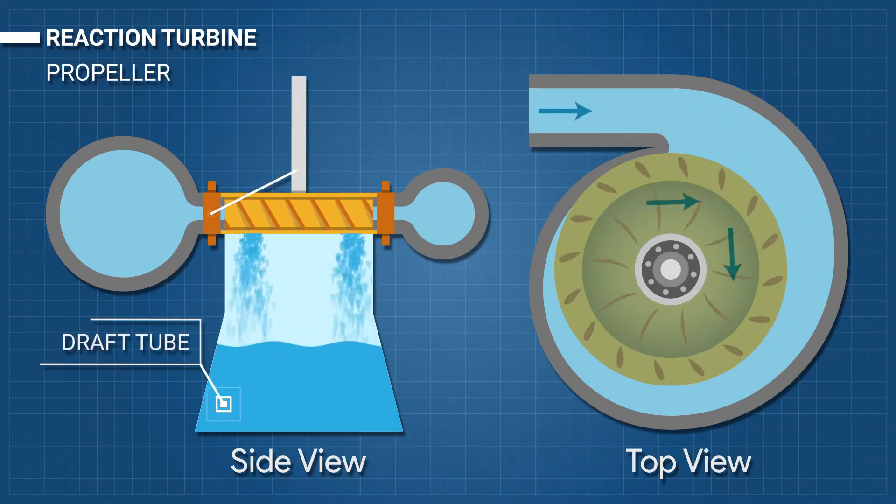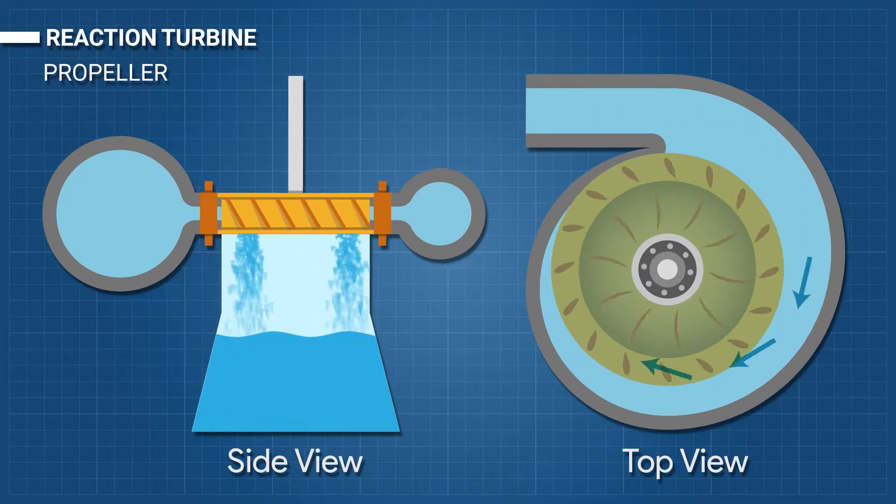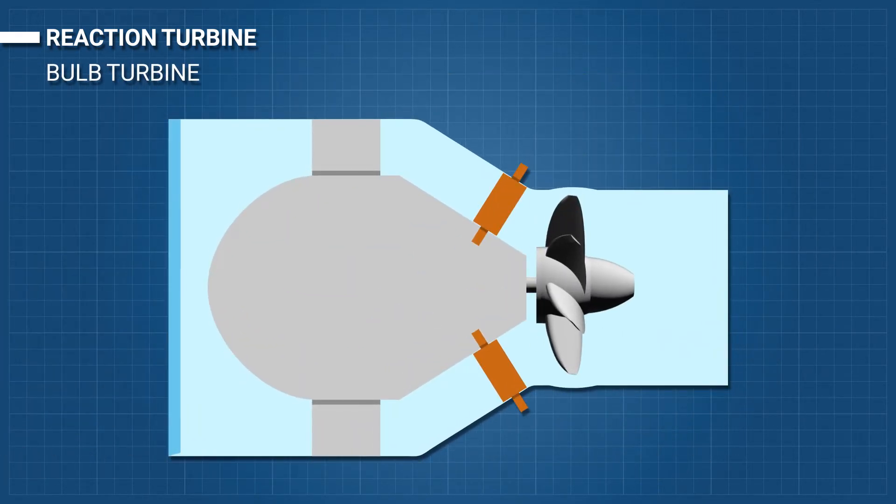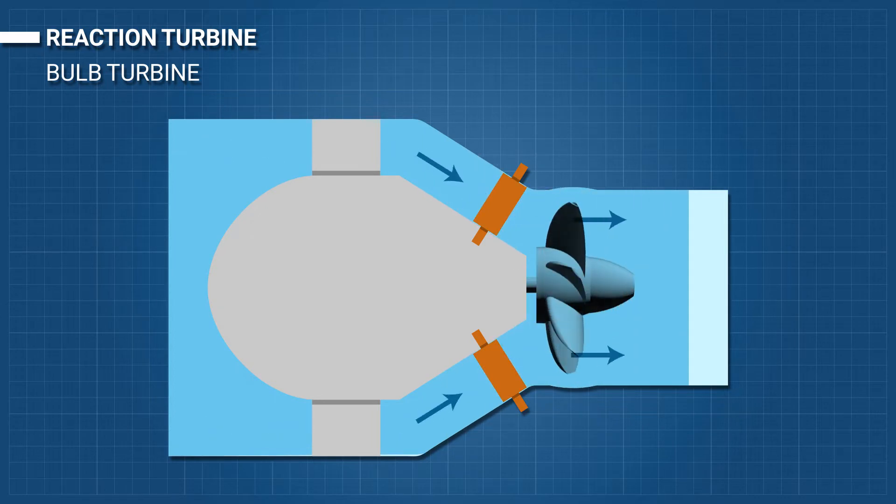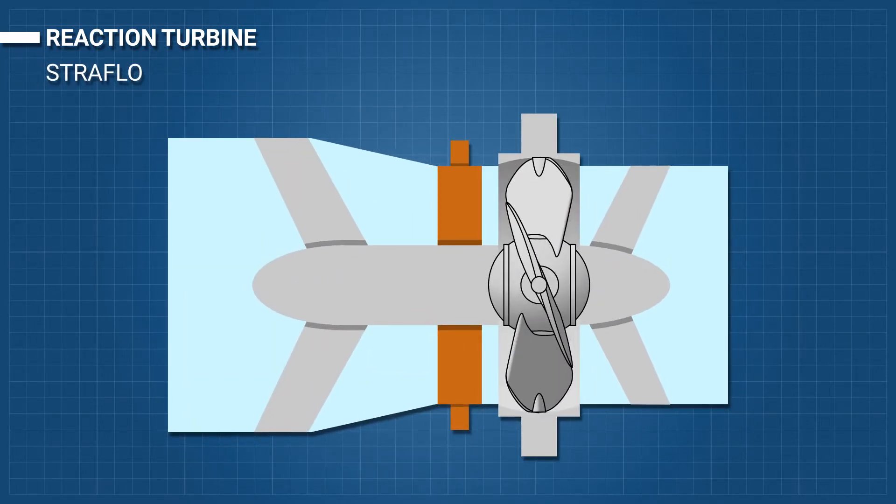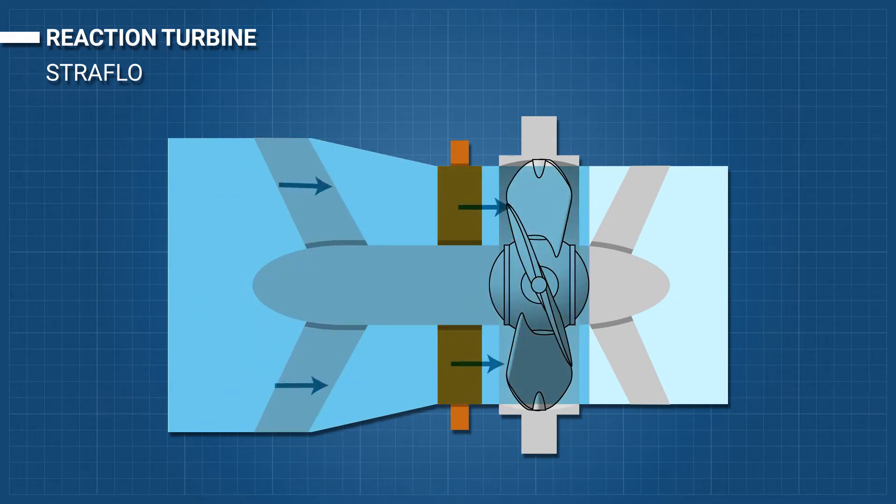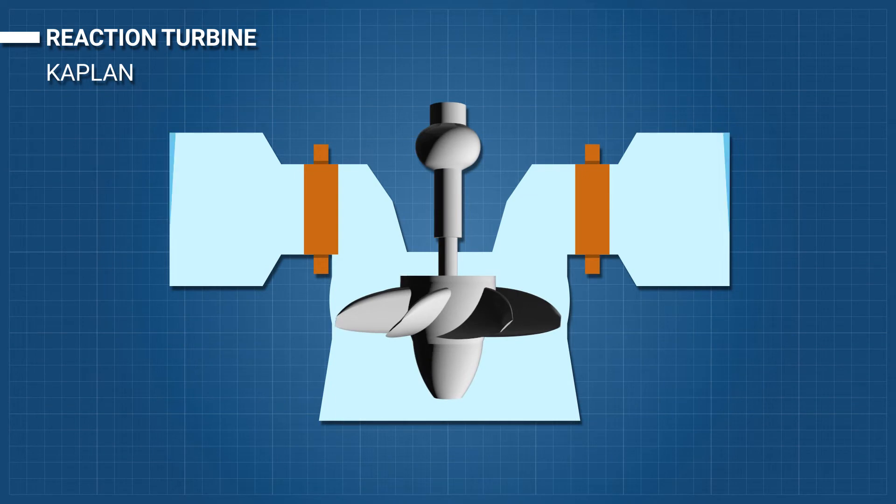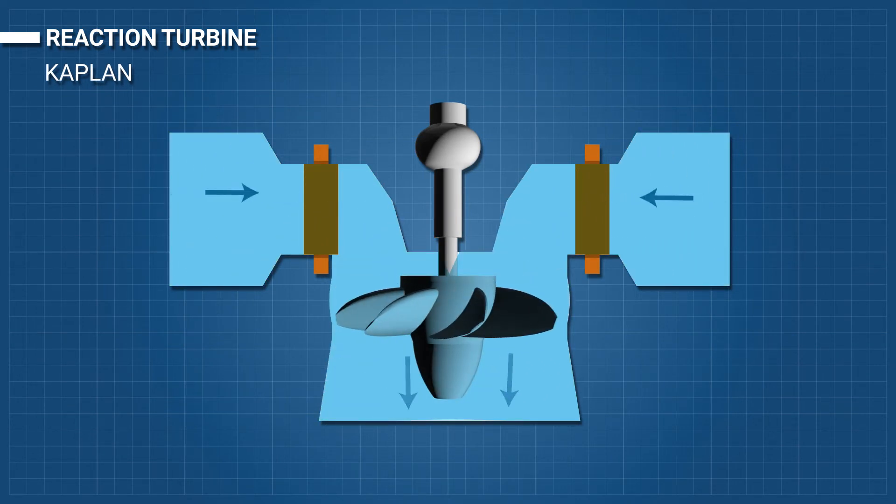There are several different types of propeller turbines. Bulb turbine: The turbine and generator are a sealed unit placed directly in the water stream. Straffalo: The generator is attached directly to the perimeter of the turbine. Kaplan: Both the blades and the guide vane are adjustable, allowing for a wider range of operation.